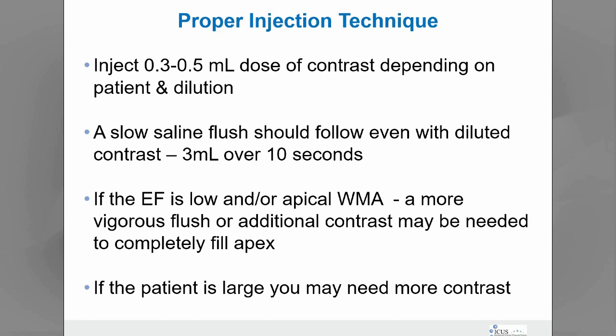Our proper injection technique is to inject about 0.3 to 0.5 mLs of contrast depending on the patient — considering the size of the patient, the difficulty of the images, how the patient's heart is functioning, and whether we're diluting the contrast agent. We do a slow saline flush following every administration of contrast, usually about 3 mLs over 10 seconds, being very careful not to inject too quickly, which would cause attenuation. If the ejection fraction is low or there's an apical wall motion abnormality, a more vigorous flush or additional contrast may be needed. If the patient is large, you may need to inject more contrast to get complete filling.